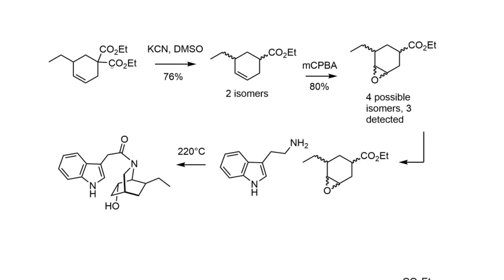Now that the diester group has served its purpose by activating the Michael addition, we need to remove one of these groups. That was accomplished by the fairly harsh reaction of refluxing in DMSO with potassium cyanide — you'd want to be very careful not to spill this on your exposed skin. Under Crapcho-type conditions, one of the esters is removed, affording the ester cyclohexene. This is where the stereochemical situation starts to get more complicated, because there's no real selectivity as to which ester group is decarboxylated, giving a mixture of two isomers. Then there's no selectivity on the subsequent epoxidation with MCPBA, so there are actually four possible isomers. Three were detected, and on the basis of their instrumentation they weren't able to assign which isomer was which. They weren't able to preparatively separate them, but they just took the mixture forward, and it turns out that was enough to get them where they needed to go.